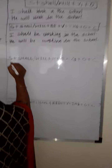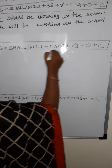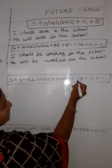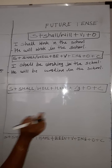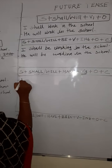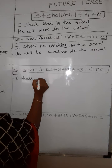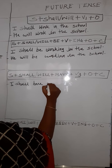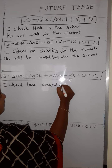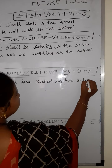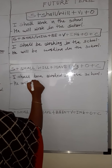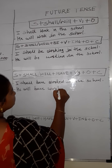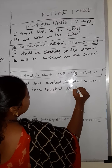Now, perfect future tense. Learn the formula well: S plus shall/will plus have plus V3. 'Shall/will' indicates future, and V3 indicates perfection — so it is future perfect tense. For example: 'I shall have worked in the school.' And: 'He will have worked in the school.'